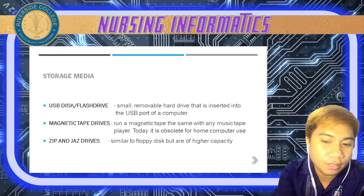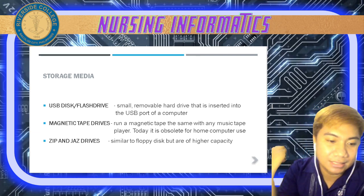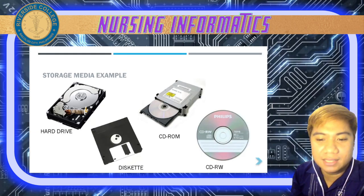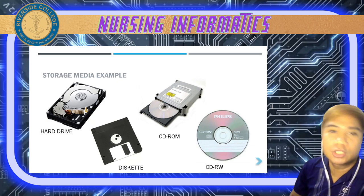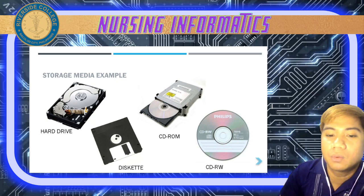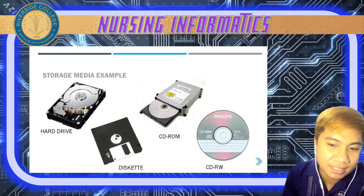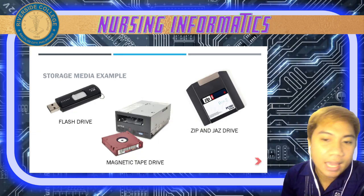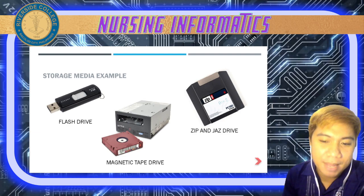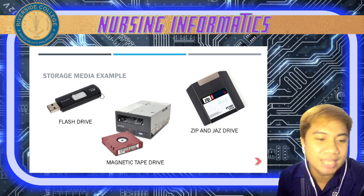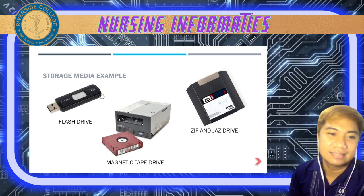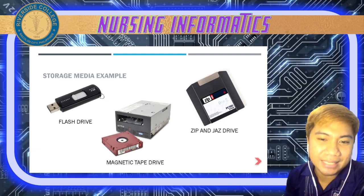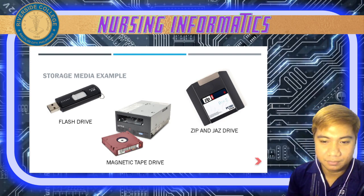We also have zip and jazz drives, similar to floppy disks but of higher capacity. These are your examples of storage media: hard drives, diskettes, CD-ROM, CD-rewritable, flash drives, magnetic tape drives, and zip and jazz drives.